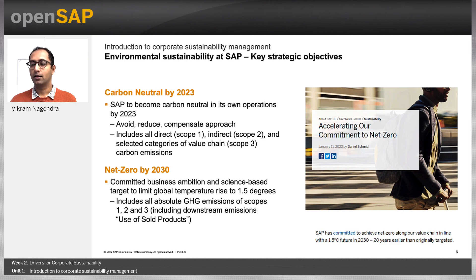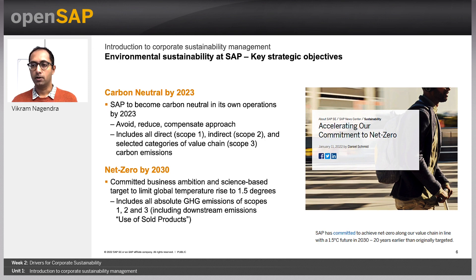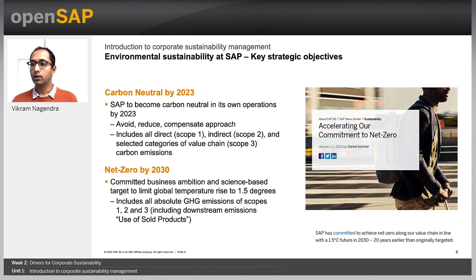Environmental sustainability goes beyond greenhouse gas management, as potentially indicated by the materiality analysis. Air emissions, waste management, water consumption and pollution management, and so on, form a holistic environmental sustainability management. While concrete targets and standards like the ones for greenhouse gases are still emerging for these additional environmental KPIs, corporations are already taking a mid- to long-term view on these. Unit 5 of this week will cover this in more detail.